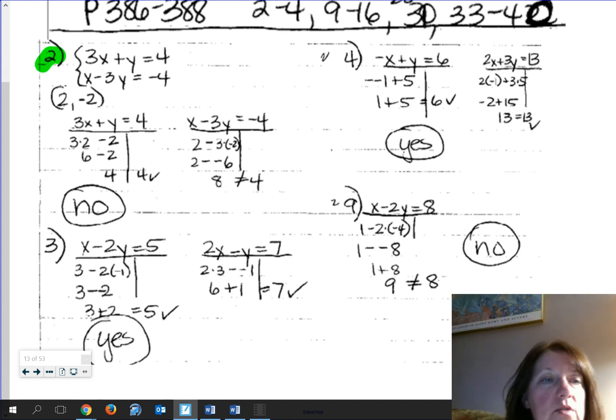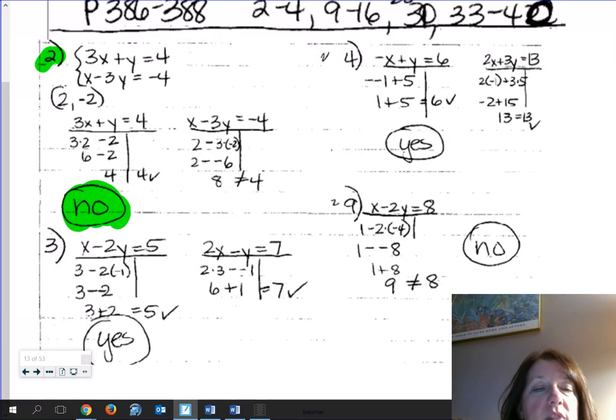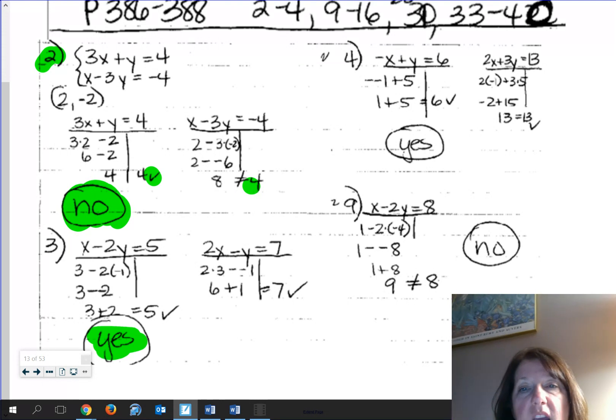So let's look at number two right here. That one should be a no. It works in the first one, as I tested, but not in the second one. Number three is a yes, because it worked in both, as is four. So that first little chunk, it goes no, yes, yes.